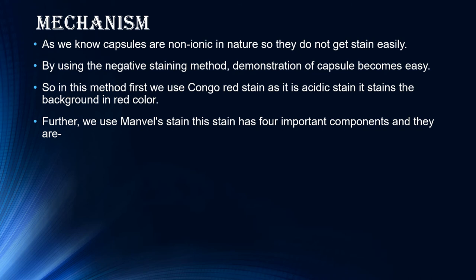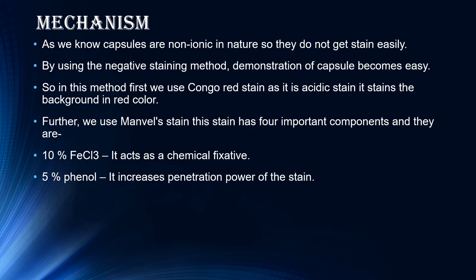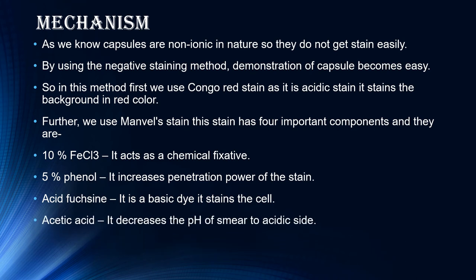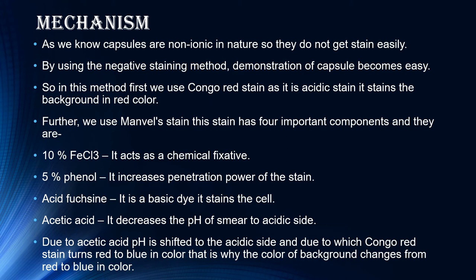We then use manual stain, which is made up of four important components. First, 10% FeCl3, which acts as a chemical fixative — it fixes the bacterial cell to the surface of the slide, which is why we do not heat fix the slide. Second, 5% phenol, which increases the penetration power of the stain. Third, acid fuchsin, which is a basic dye that stains the cell. Fourth, acetic acid, which decreases the pH of the smear to the acidic side. Due to acetic acid, the pH shifts to the acidic side, causing the Congo red stain to turn from red to blue, which is why the background color changes from red to blue.